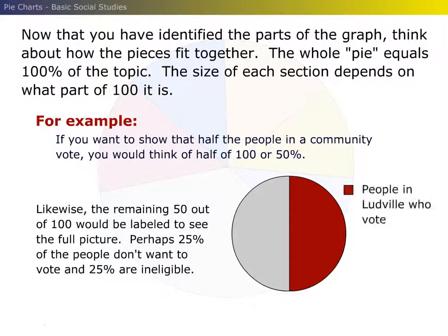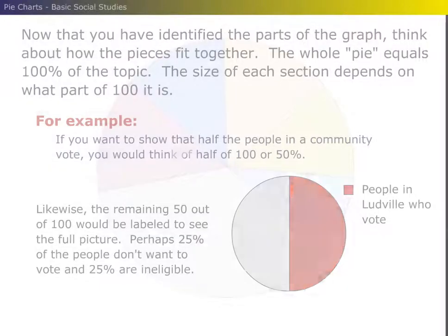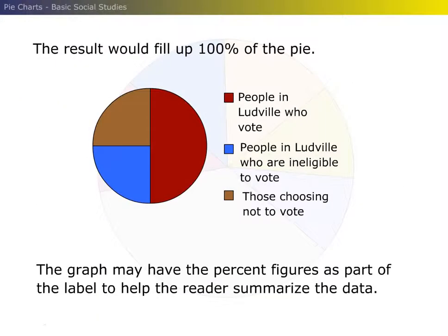For example, if you want to show that half the people in a community vote, you would think of half of 100, or 50%. Likewise, the remaining 50 out of 100 would be labeled to see the full picture. Perhaps 25% of the people don't want to vote, and 25% are ineligible. The result would fill up 100% of the pie.